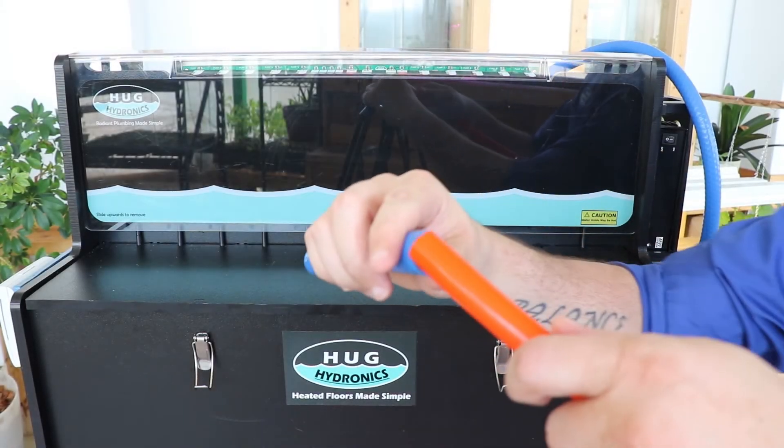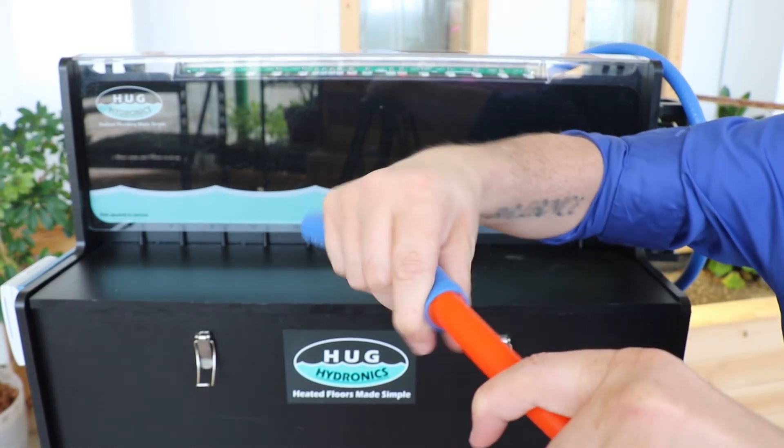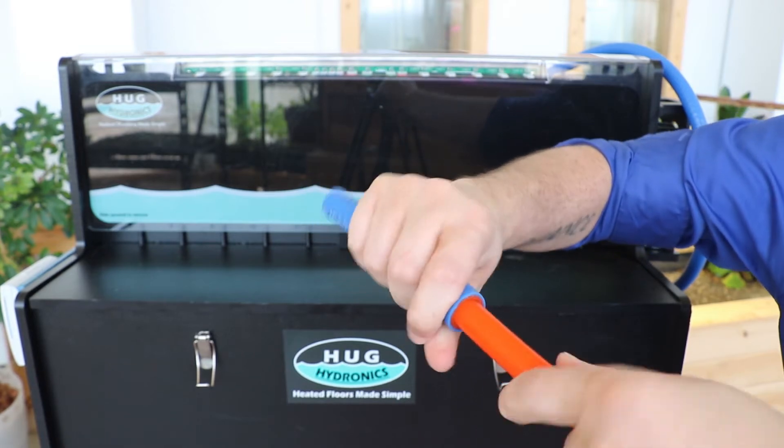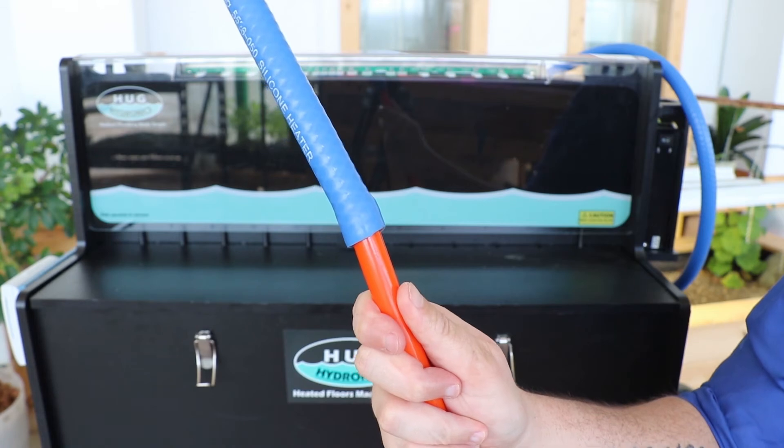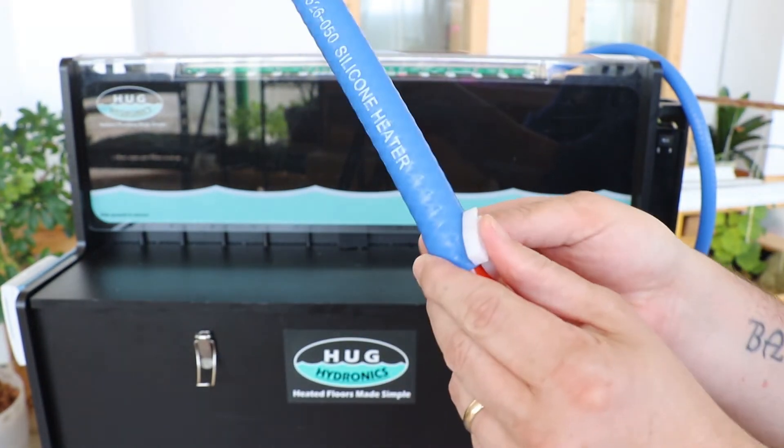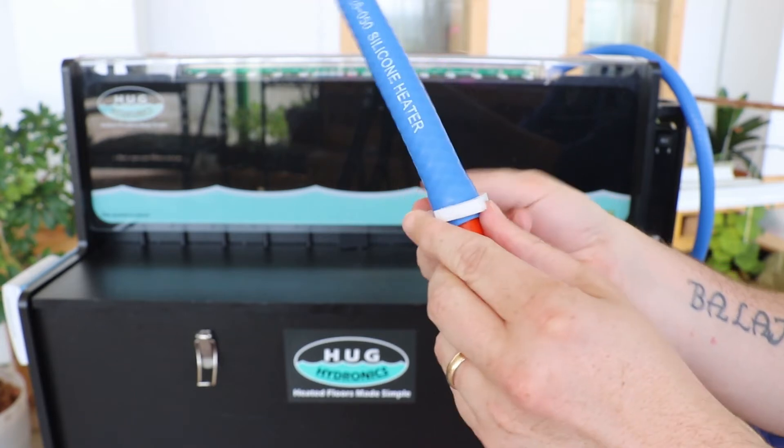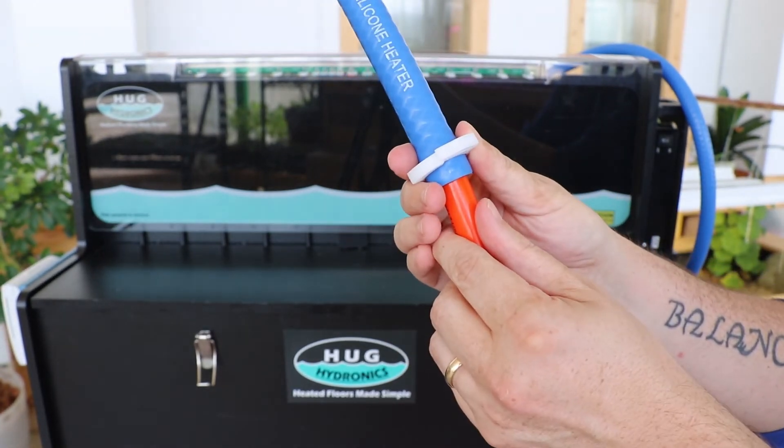To connect the hoses, insert the PEX pipe into the blue hose. Slip the clamp onto the hose. Tighten the clamp over where they connect.